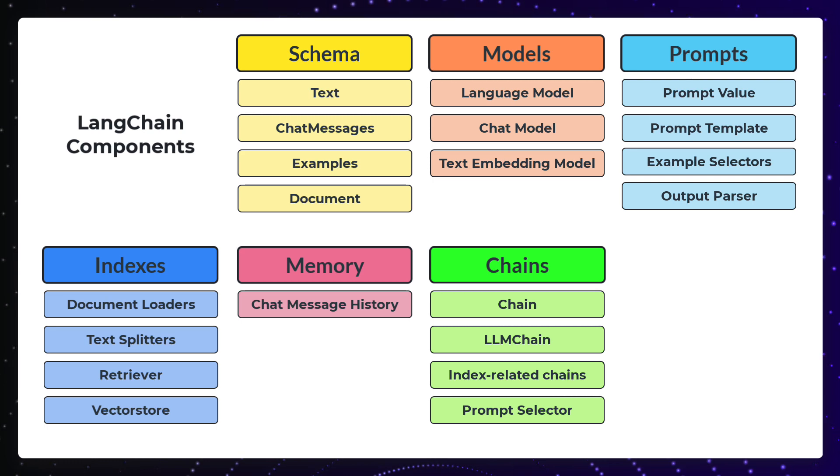A chain is just an end-to-end wrapper around one or multiple components. The most common type of chain is LLM chain. It consists of a prompt template, a model, and optionally an output parser.